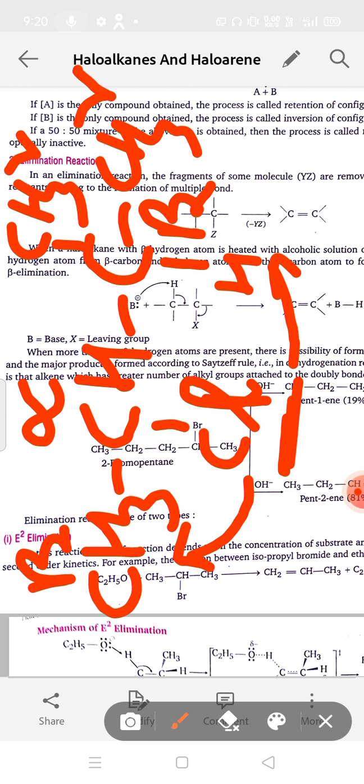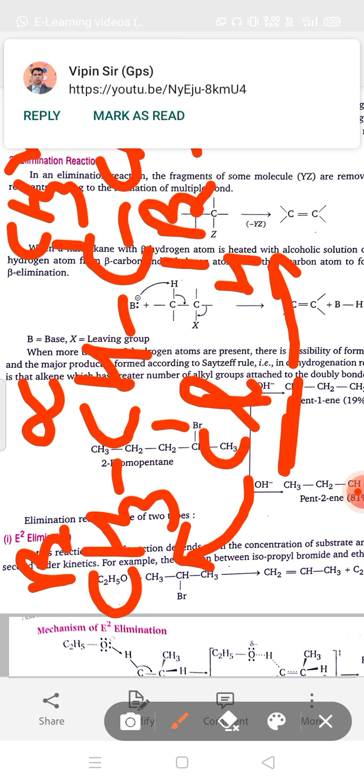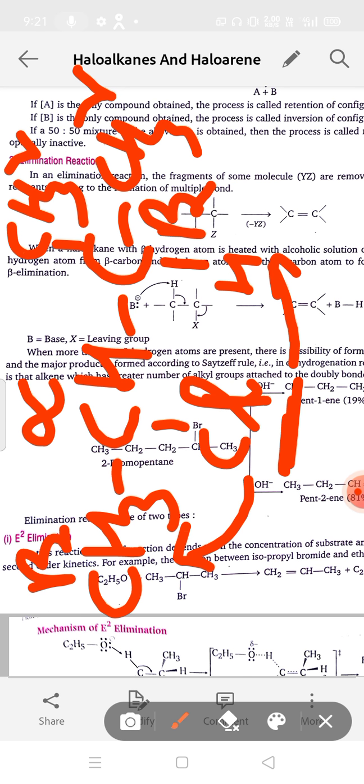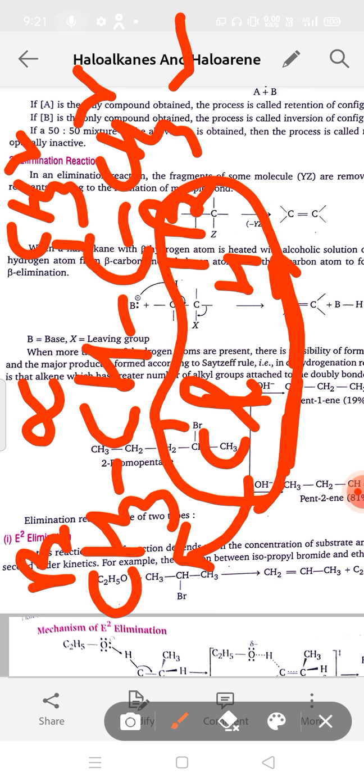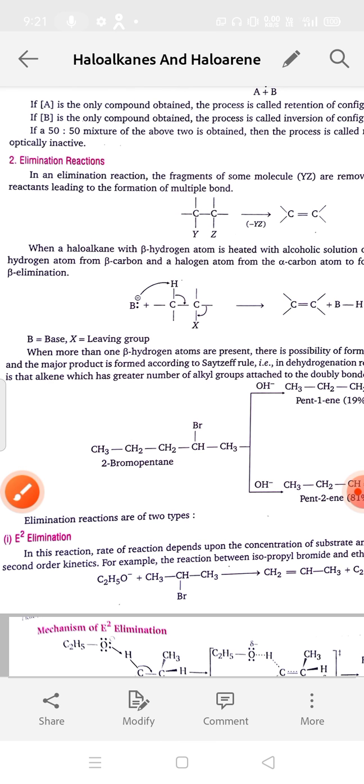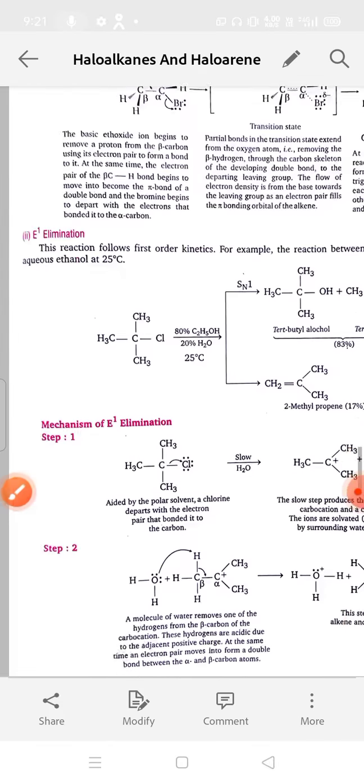Now you came to know about which carbon will be alpha carbon, which carbon will be beta and gamma. Beta elimination will take place. For Cl, this is also beta and this one is also beta. Here Saytzeff rule will apply. You learned that with Cl, hydrogen will be removed from where the more alkylated carbon is, where more alkyl groups are attached. Means from here it will go, because on it two alkyl groups are attached.